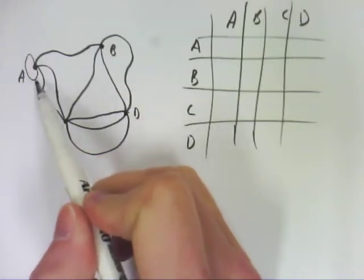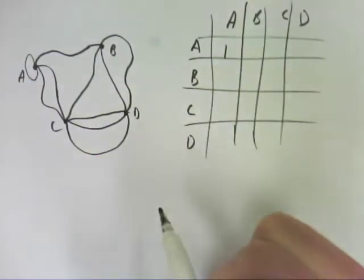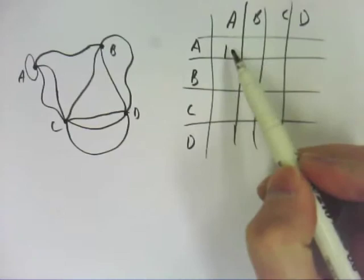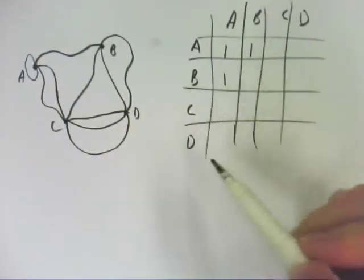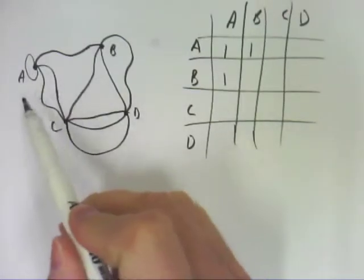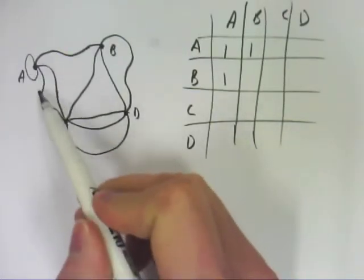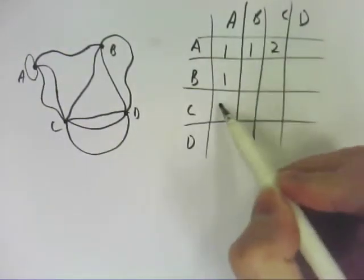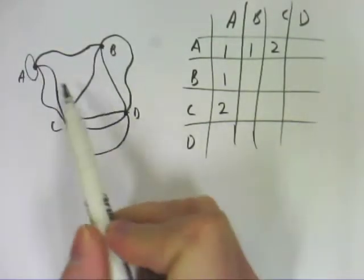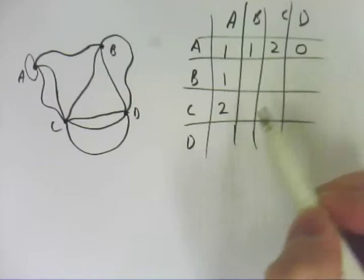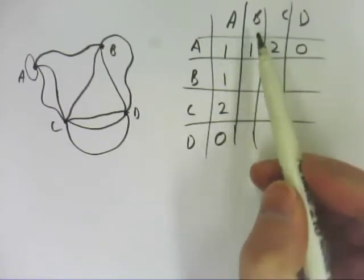So from A to A, there is this one here. From A to B, there is only one as well, and from B to A the same. From A to C, there are two roads, and from C to A the same. From A to D, there are actually no roads.